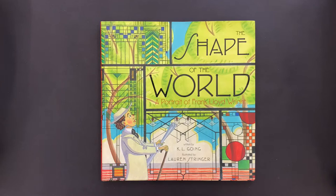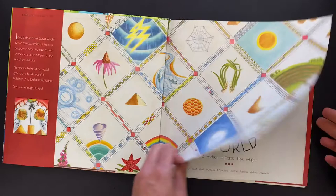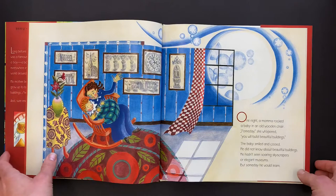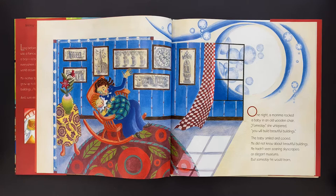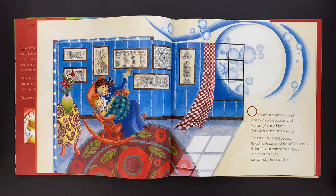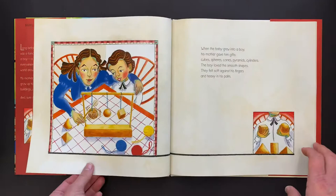Let's get started. The Shape of the World, A Portrait of Frank Lloyd Wright, written by K.L. Going, illustrated by Lauren Stringer, and published by Beach Lane Books. One night, a mama rocked a baby in a wooden chair. Someday, she whispered, you will build beautiful buildings. The baby smiled and cooed. He did not know about beautiful buildings. He hadn't seen soaring skyscrapers or elegant museums. But someday, he would.